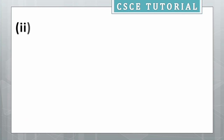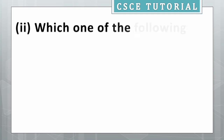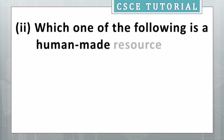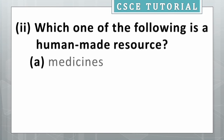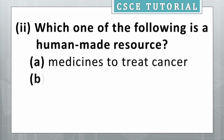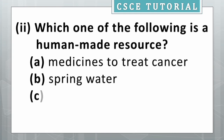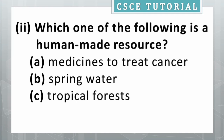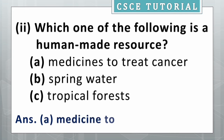Second question is which one of the following is a human-made resource? The options are A — medicine to treat cancer, B — spring water, C — tropical forest. Its answer is A — medicines to treat cancer.